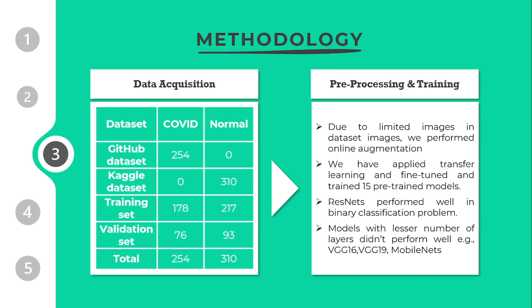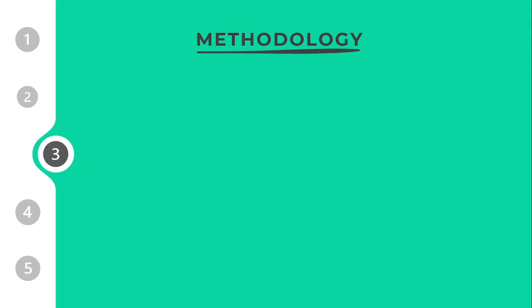ResNet performed well in our case because it has an optimal number of layers in the network. Models with a lesser number of layers, like VGG-16, VGG-19, and MobileNets, did not perform well in our case.